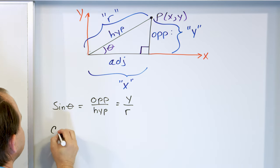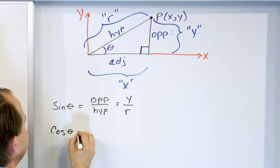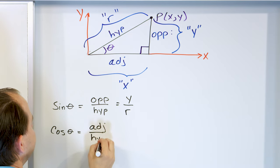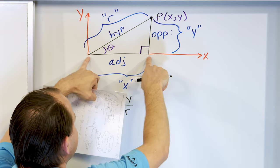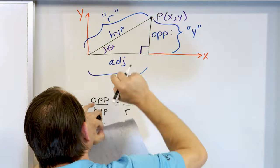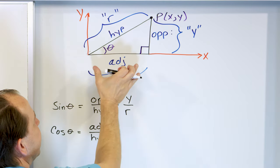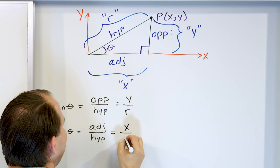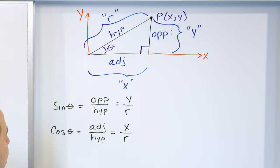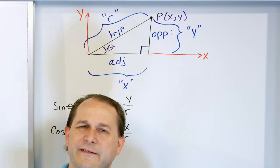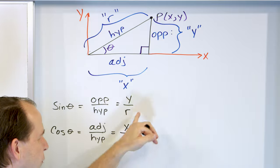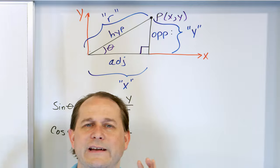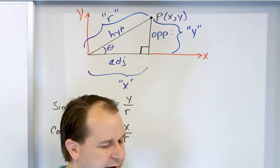The cosine was also introduced in the last lesson. It's defined to be the adjacent side divided by the hypotenuse. Since the adjacent side is X and the hypotenuse is R, cosine of theta equals X over R. We use opposite, adjacent, hypotenuse language at first, but eventually we drop that and just talk about X's, Y's, and R's.